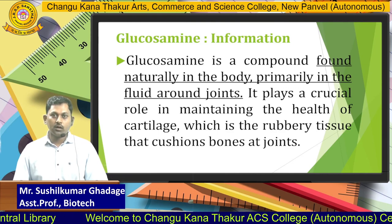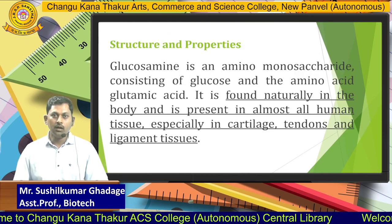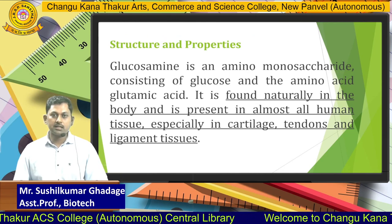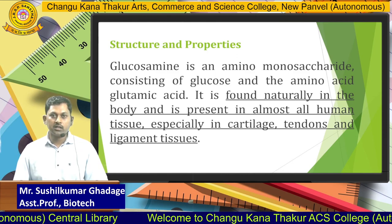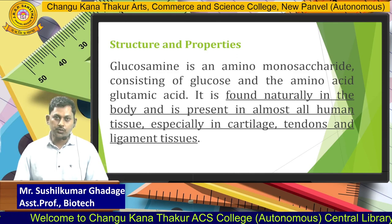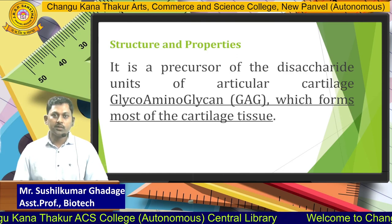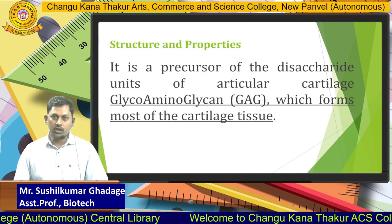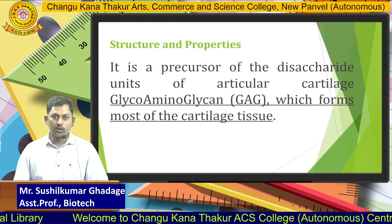Glucosamine is an amino monosaccharide consisting of glucose and the amino acid glutamic acid. It is found naturally in the body and present in almost all human tissues, especially in cartilage, tendons, and ligament tissues. Notably, glucosamine is a precursor of the disaccharide units of articular cartilage — glycosaminoglycan (GAG) — which forms most of the cartilage tissue.